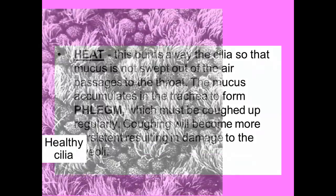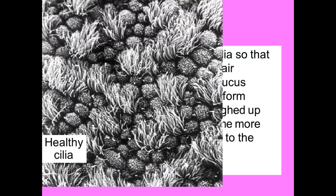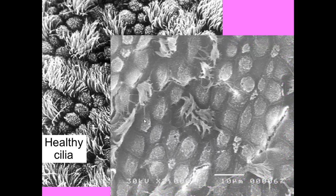This is what healthy cilia look like — loads of cilia all over the place, waving and wafting and doing what they do best. This is what unhealthy cilia look like — not so great. Which would you prefer? Healthy, wafting cilia to move mucus out of your lungs.